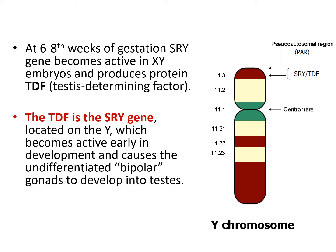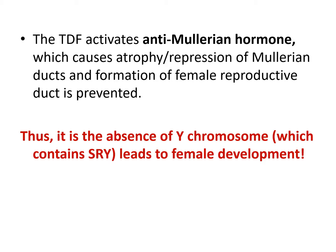By six to seven weeks of gestation, the SRY gene becomes active and starts expression. It produces the protein TDF — testes-determining factor. Located on the Y chromosome, it becomes active early during development and causes undifferentiated bipotential gonads to develop into testes. Interestingly, TDF activates anti-Müllerian hormone, which causes atrophy or repression of Müllerian ducts, so formation of female reproductive ducts is prevented.